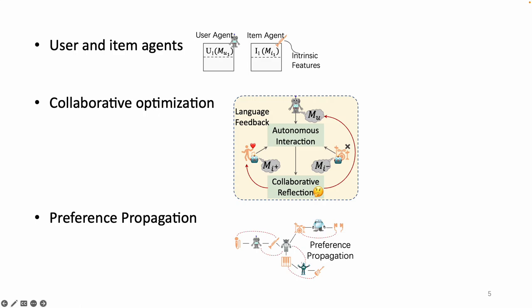Specifically, our approach equips both user and item-agents with memory modules, maintaining the simulated preference and tastes of potential adopters. This involves their intrinsic features as well as acquired behavior information. As the key of our approach, we collaboratively optimize the user-agents and item-agents, leveraging the remarkable decision-making and reflection abilities of language models.